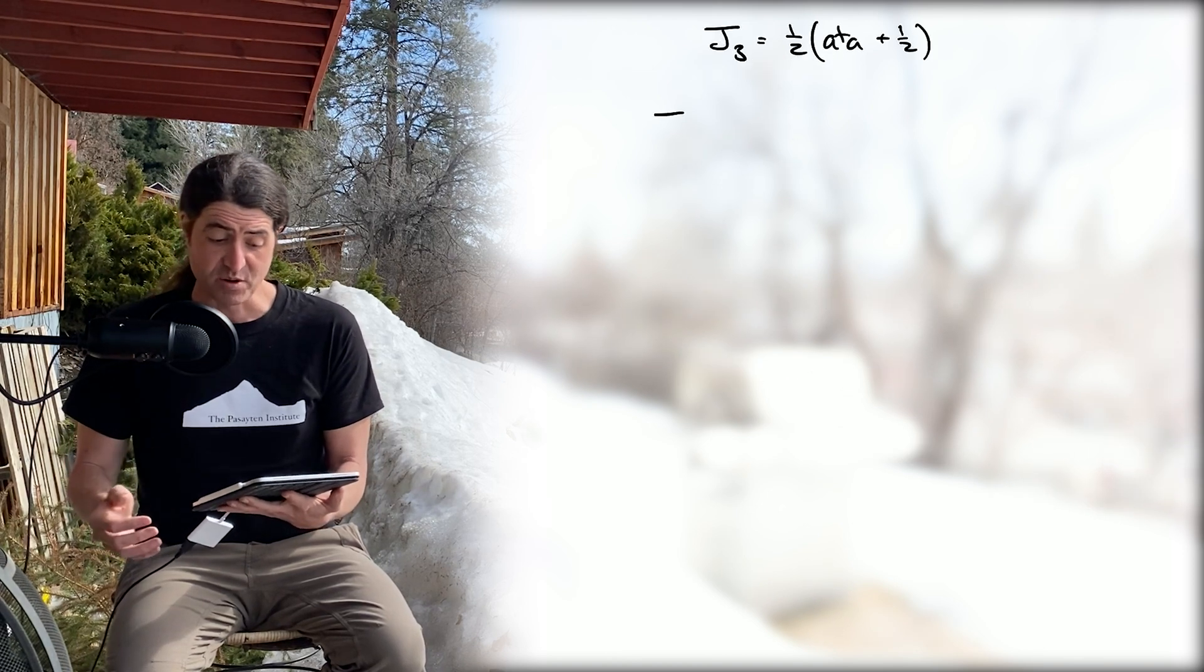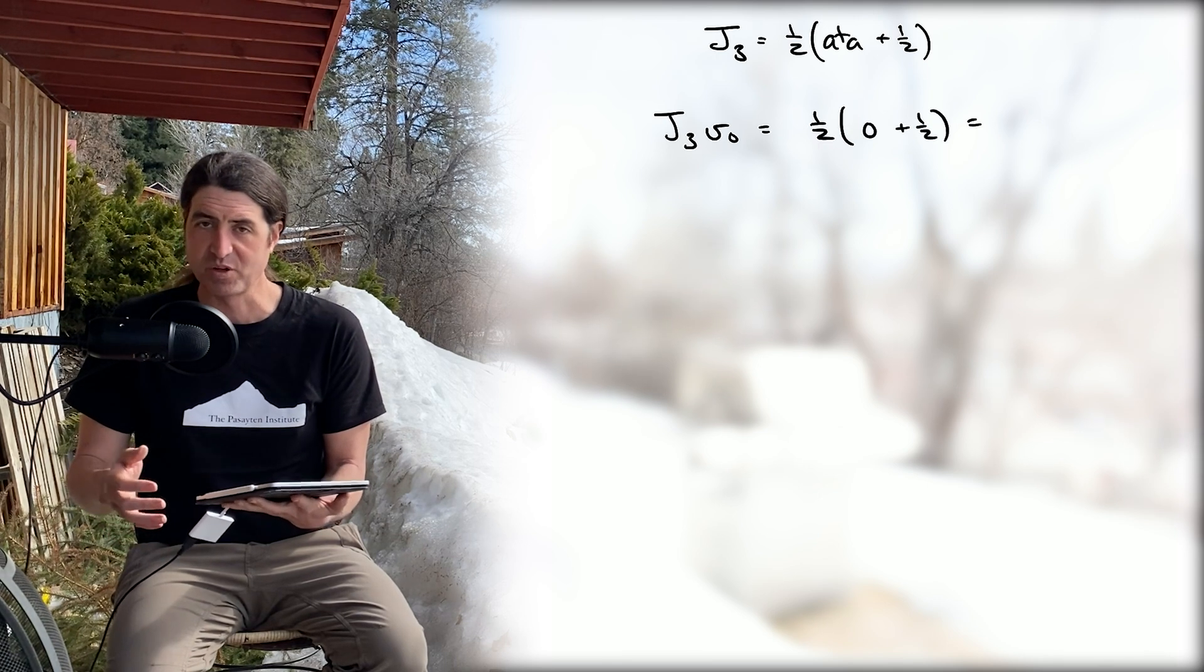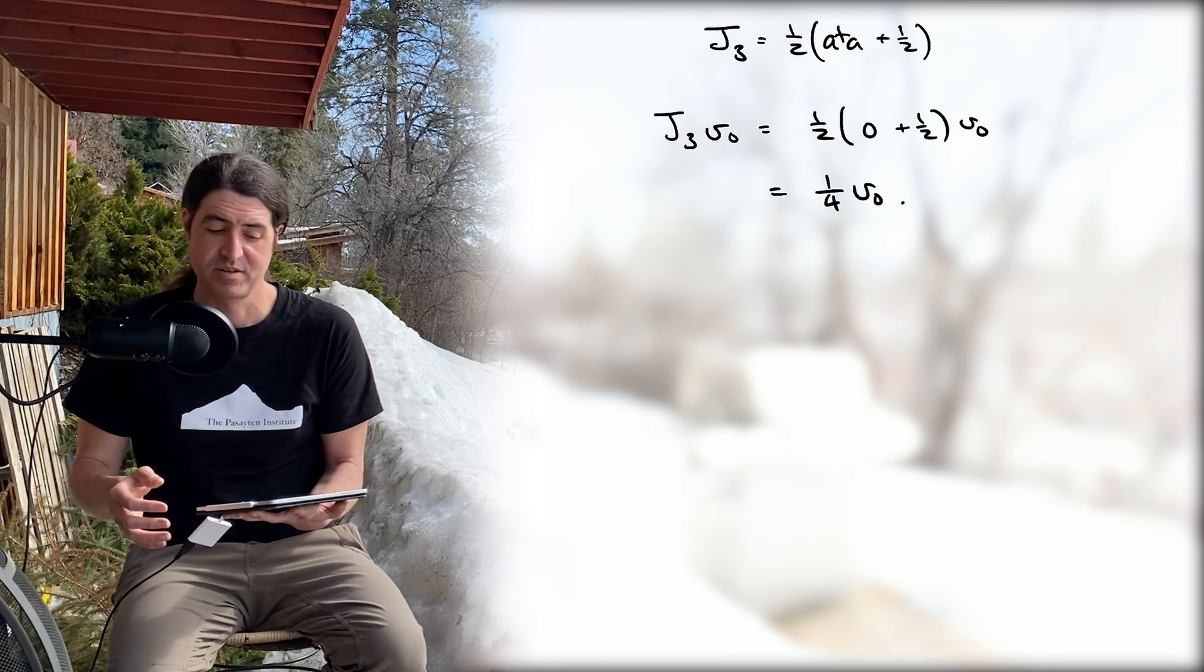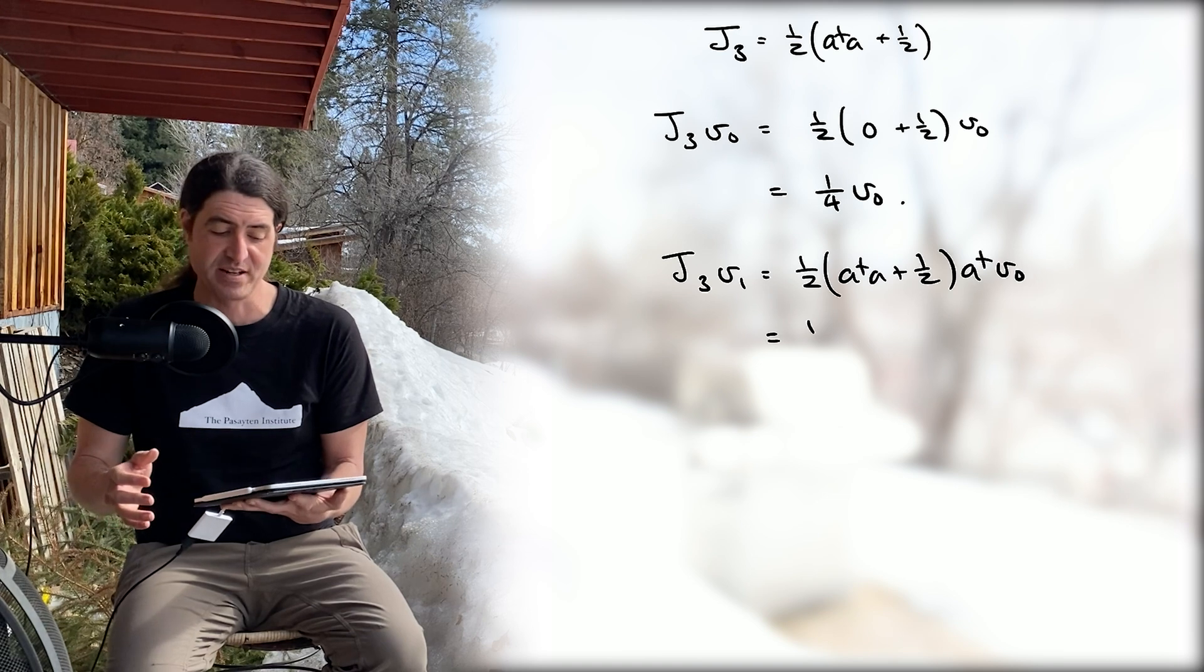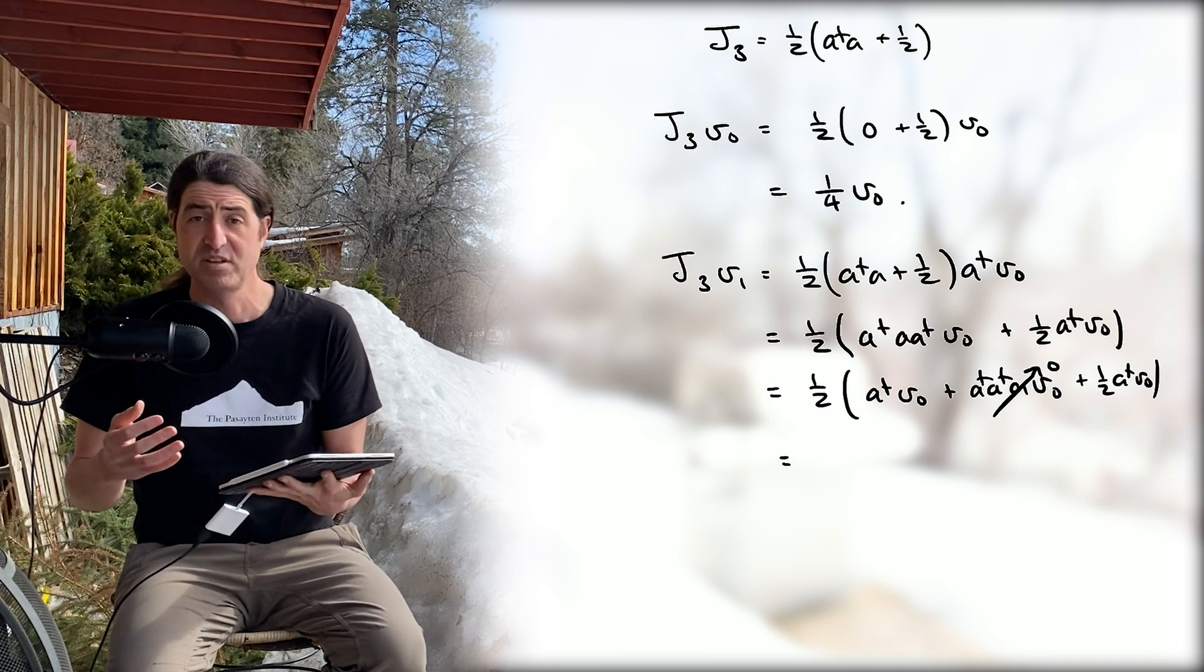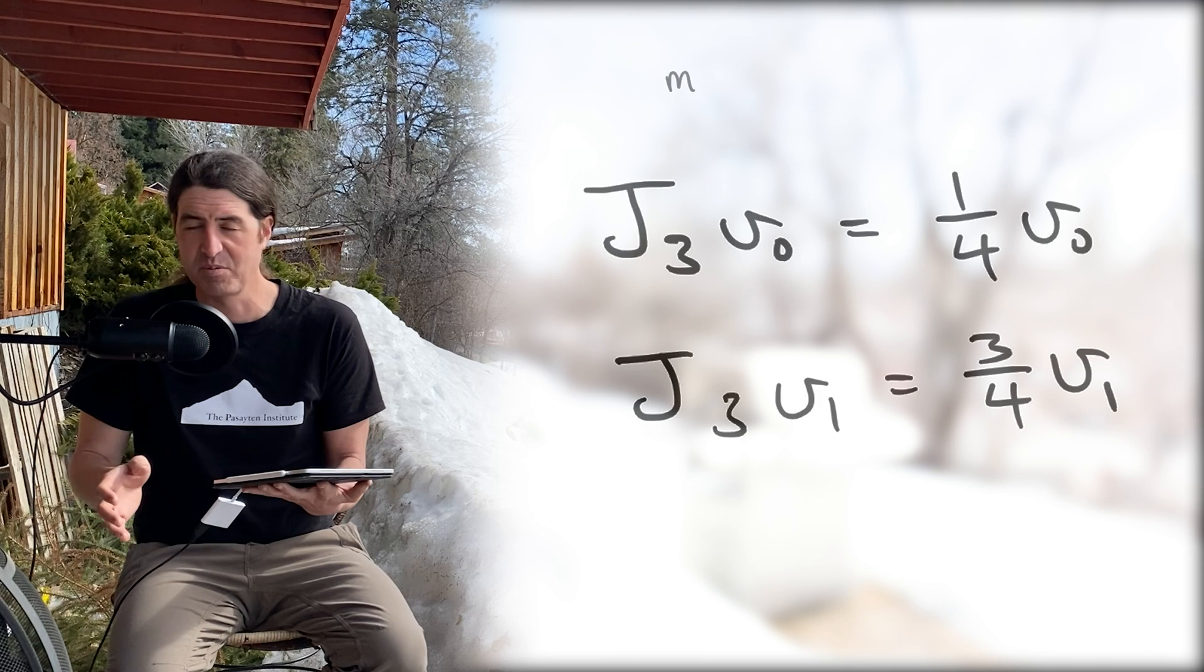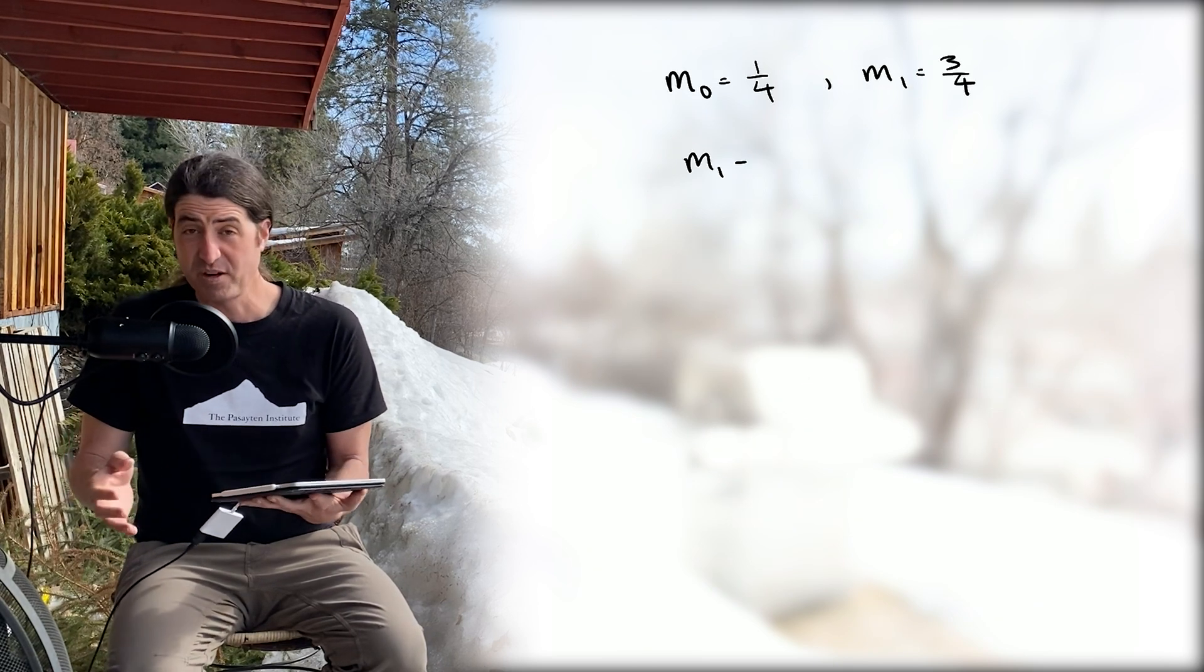Now let's consider the action of J3. J3 on v0 gives us an operator, and remember that a annihilates v0, so we're left with one fourth of v0. Similarly, with slightly more complication, we find that the action of J3 on v1 gives us back v1 but with an eigenvalue of three fourths.